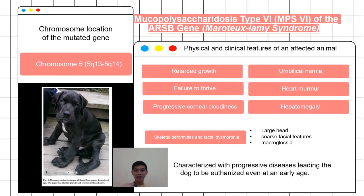Clinical signs of an affected dog include retarded growth, failure to thrive, progressive corneal cloudiness, umbilical hernia, heart murmur, hepatomegaly, skeletal deformities, and facial dysmorphia — including a large head with a buildup of fluid in the brain, distinctive coarse facial features, and large tongue or macroglossia. This is characterized as a progressive disease, leading the dog to be euthanized even at an early age.